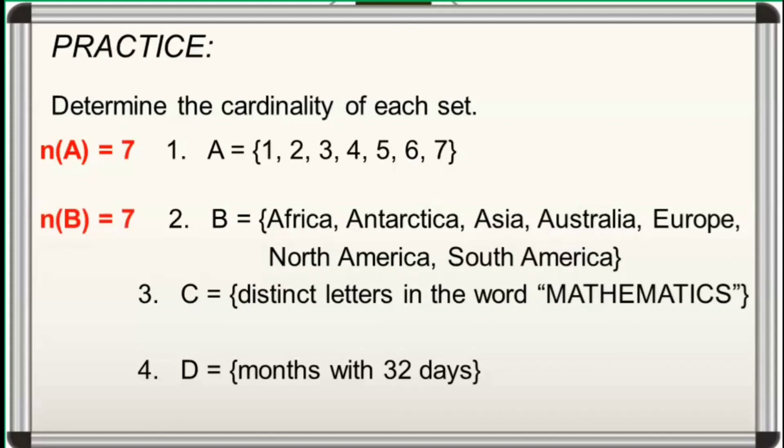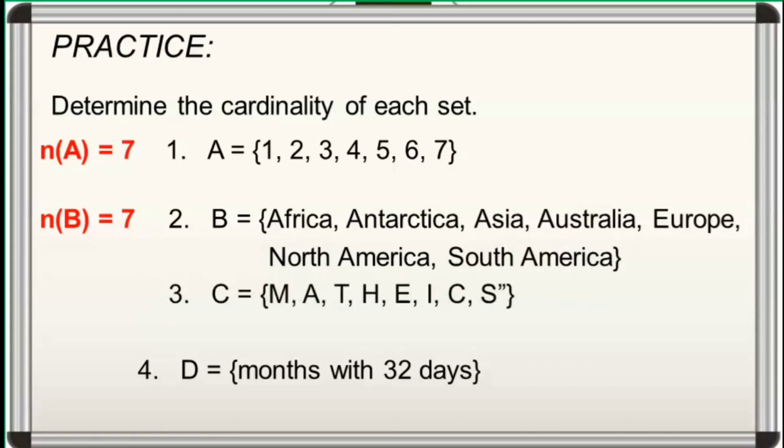For number 3, set C is the set of distinct letters in the word mathematics. We have the letters M, A, T, H, E, I, C, and S. So, N of C is equal to 8.